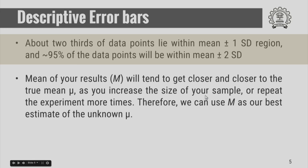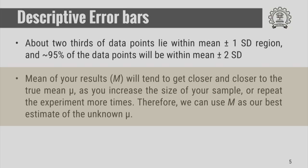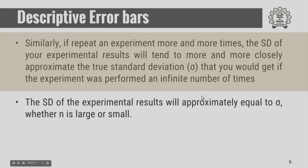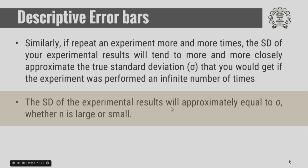The mean of your result will tend closer and closer to the true mean as you increase the size of your sample or repeat your experiments more times. Therefore, you can use the mean as your best estimate of your unknown true value. Similarly, if you repeat an experiment more and more times, the standard deviation of your experimental result will tend closer to the approximate true standard deviation sigma, and it does not matter whether your sample size n is large or small.